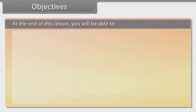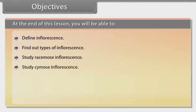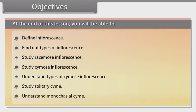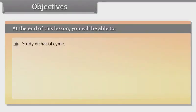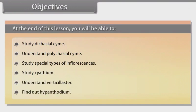At the end of this lesson you will be able to: define inflorescence, find out types of inflorescence, study racemose inflorescence, study cymose inflorescence, understand types of cymose inflorescence, study solitary cyme, understand monochasial cyme, study dichasial cyme, understand polychasial cyme, study special types of inflorescences including cyathium, verticillaster, and hypanthodium.